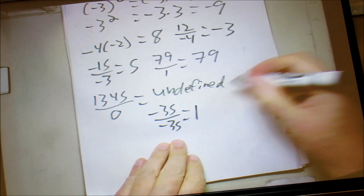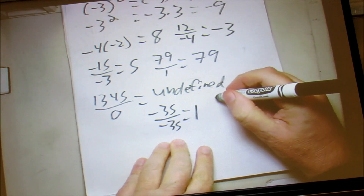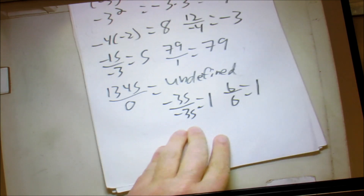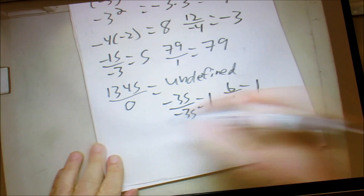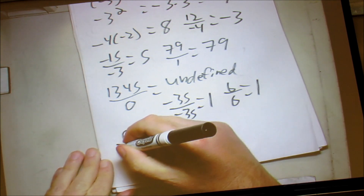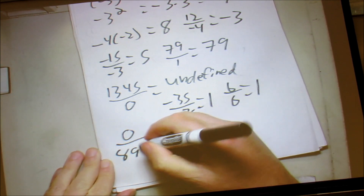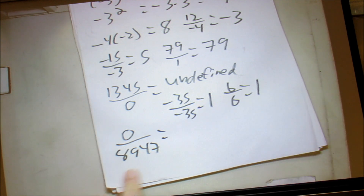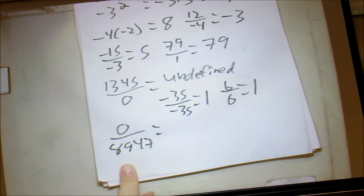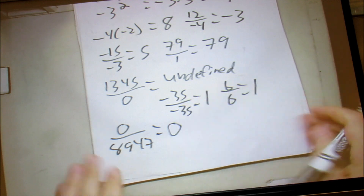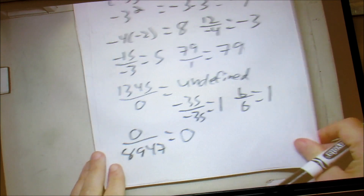Even if it's a positive number — say 6 divided by 6 — that's also 1. If we have 0 over any number, no matter how big it is — say 0 divided by 8, 9, 4, 7 — that's going to equal 0.